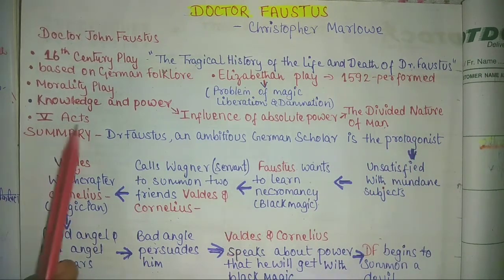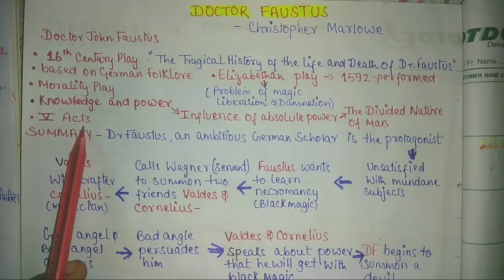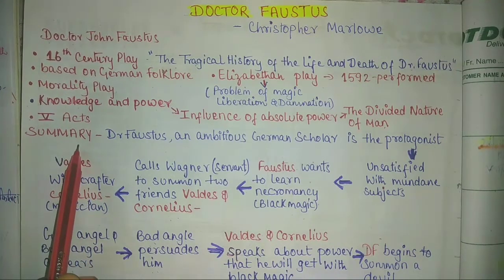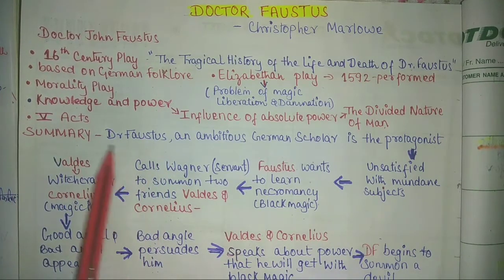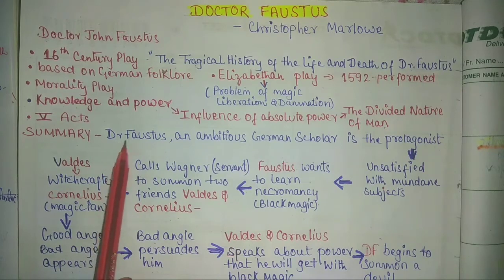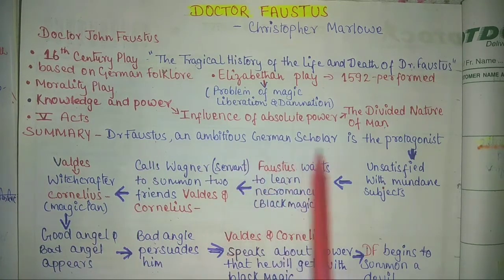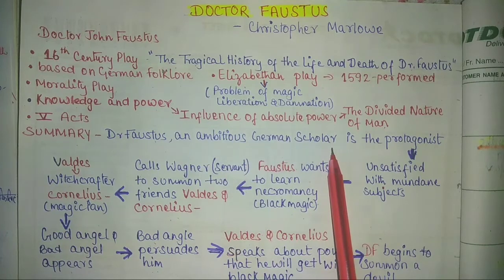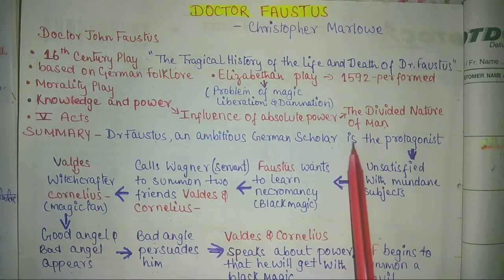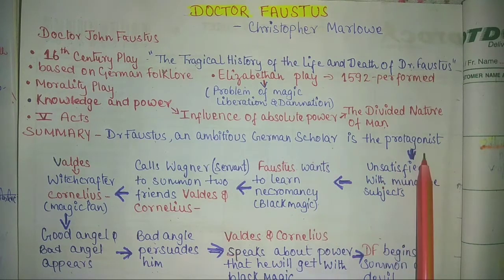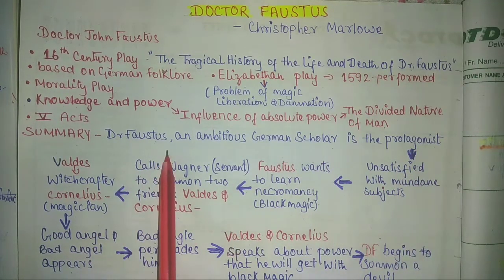This play is in five acts. In the summary, we find Dr. Faustus, who is an ambitious German scholar at Wittenberg German University. He is the protagonist of the play. Dr. Faustus was an extremely learned person who had become unsatisfied with mundane subjects. He wanted more knowledge.